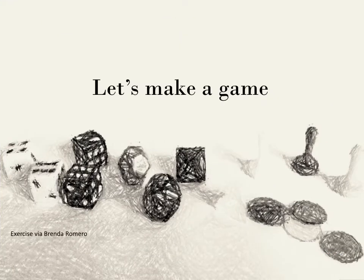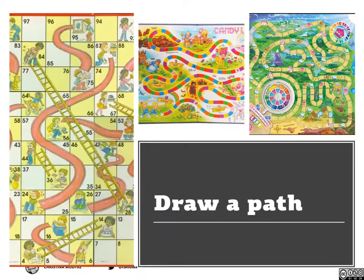I think the best way to start thinking about the elements is to actually use them. So what if we make a game? We're going to make a type of game called a race to the end game. This is very common in Chutes and Ladders, in Candy Land, in the Game of Life.